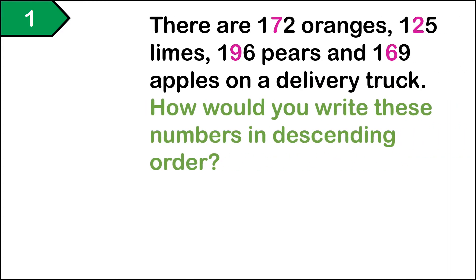Let's practice solving word problems with ascending and descending order to 200. Read with me. There are 172 oranges, 125 limes, 196 pears, and 169 apples on a delivery truck. How would you write these numbers in descending order?